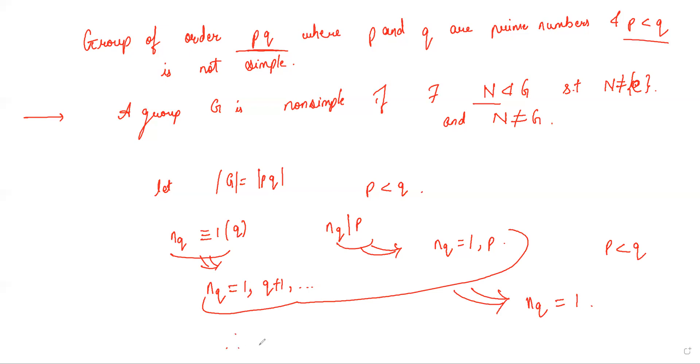Therefore, again by Sylow's theorem, if there is a unique Sylow subgroup of a given prime, then it must be normal. Therefore, the Sylow q subgroup is normal, since nq is equal to 1.